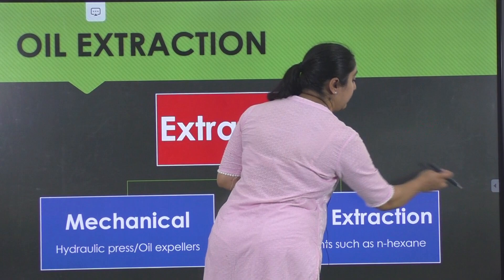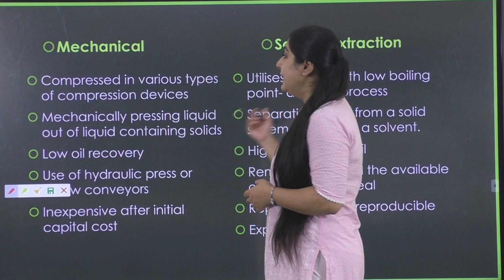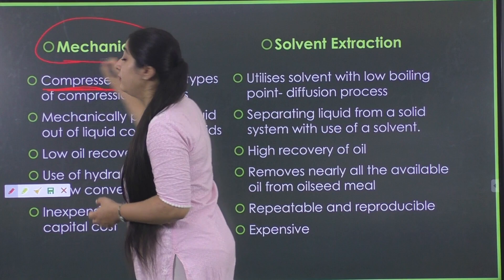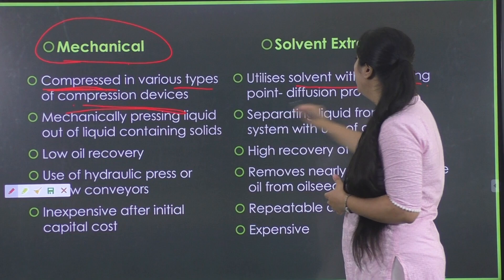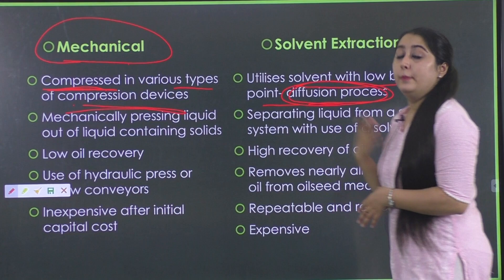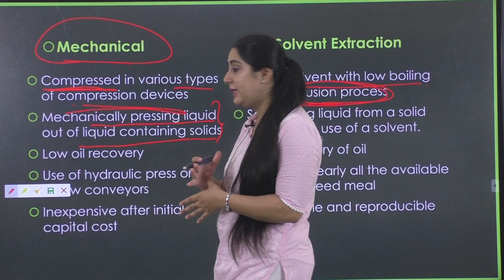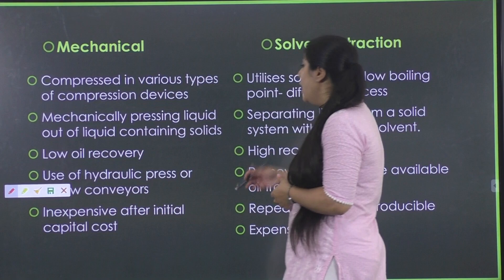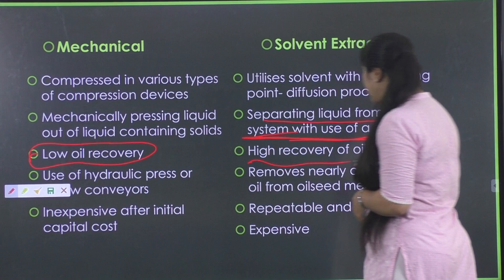Looking at the difference between solvent extraction and mechanical methods in more detail: in the mechanical method, mechanical forces are used and the material is compressed in compression devices. In the solvent extraction method, a solvent with a low boiling point is used and a diffusion process is followed — the solvent diffuses in, mixes with the oil, and diffuses back to the surface. The mechanical method mechanically presses the oil-containing solids to squeeze oil out, whereas solvent extraction separates liquid from a solid system using a solvent, giving somewhat lower recovery rates.